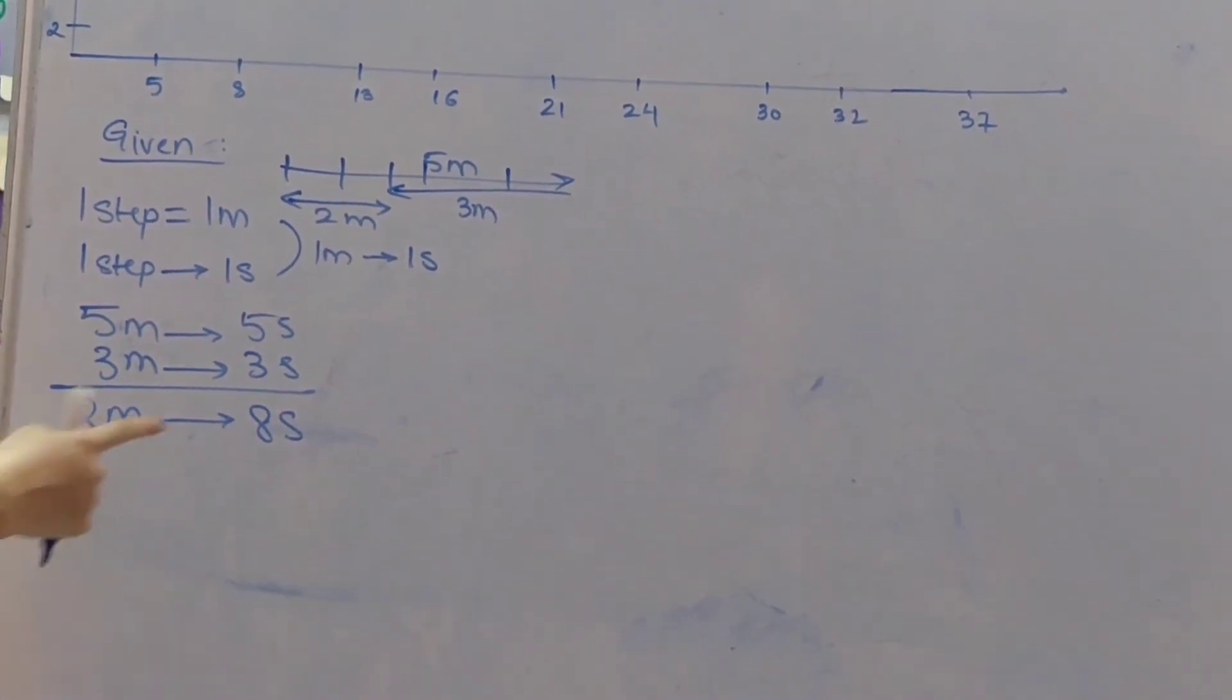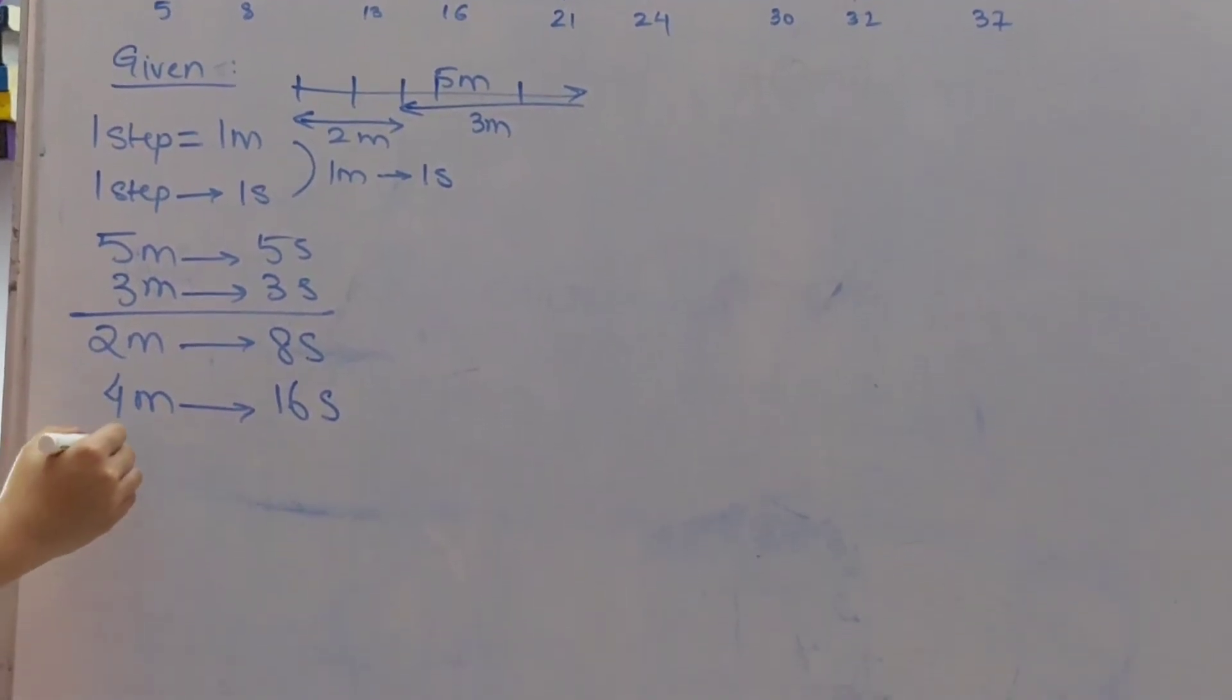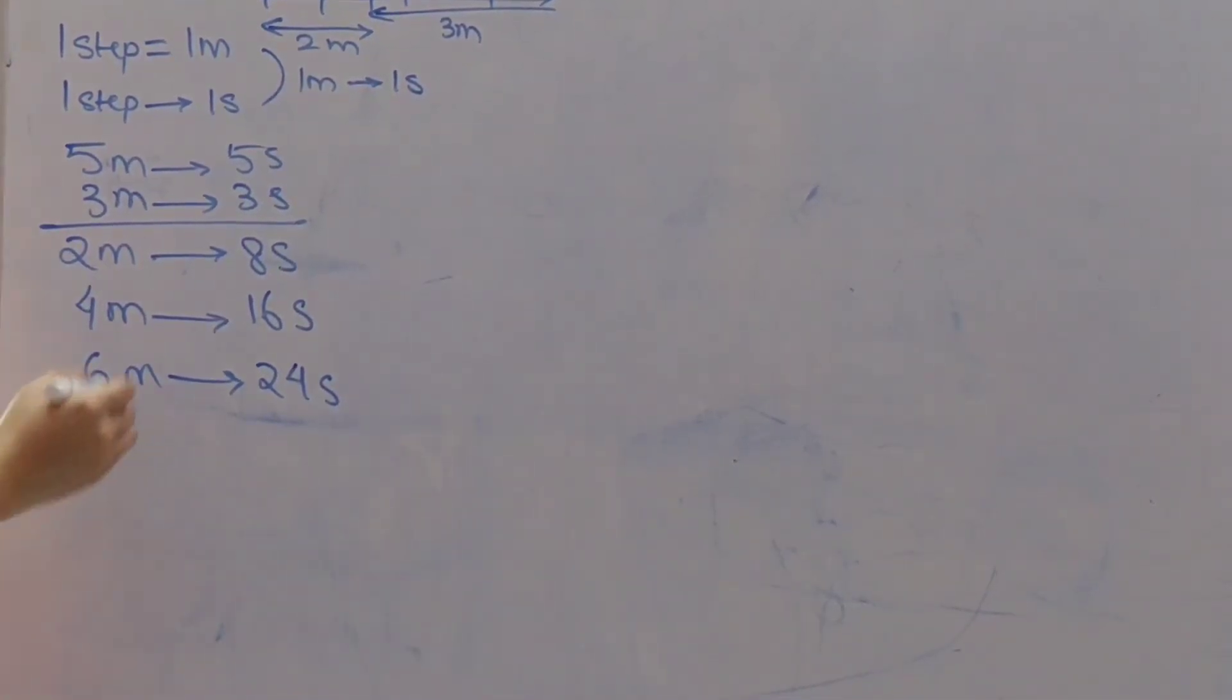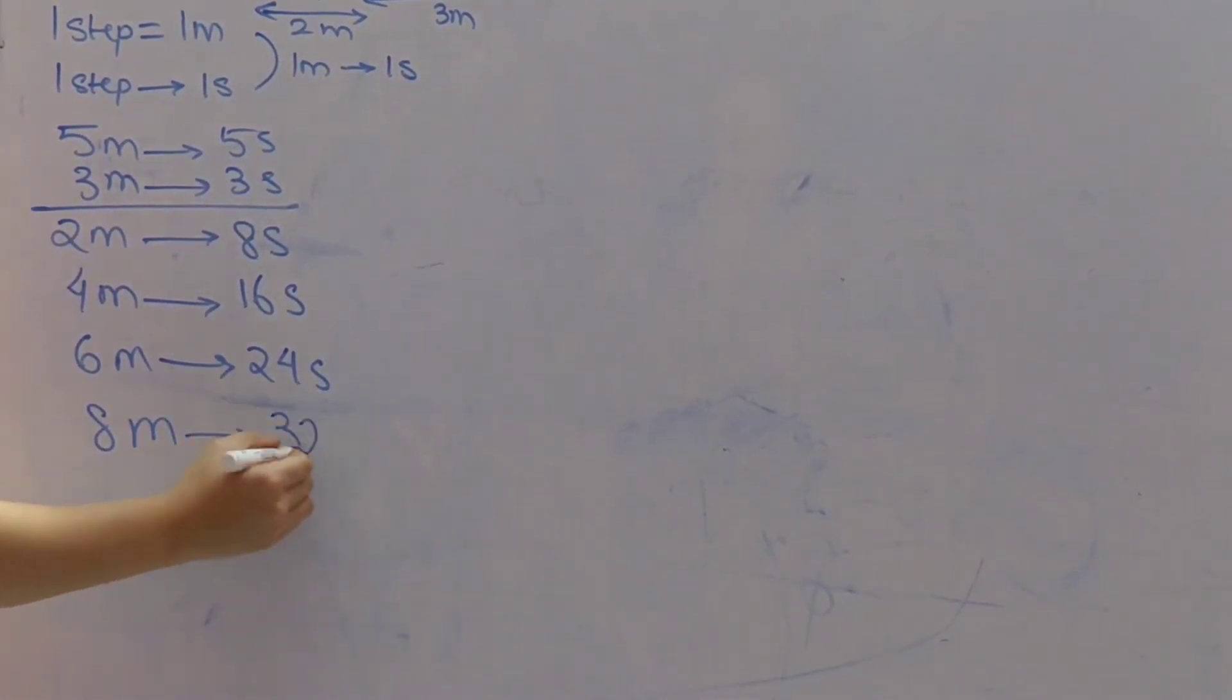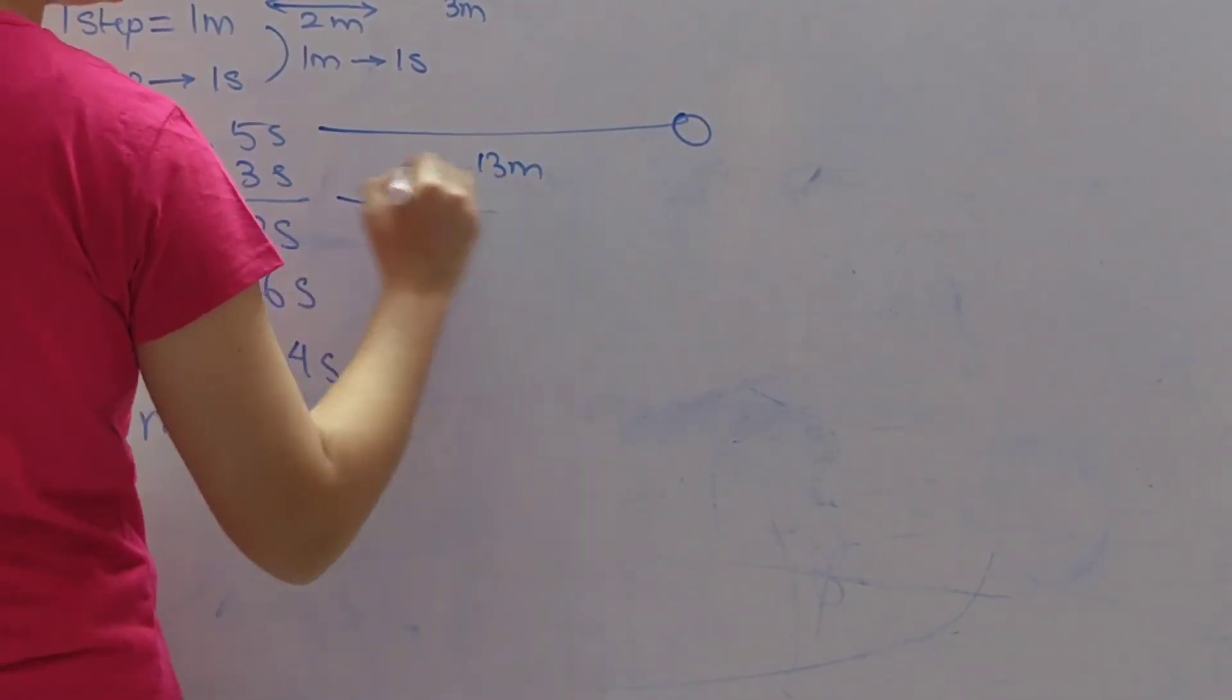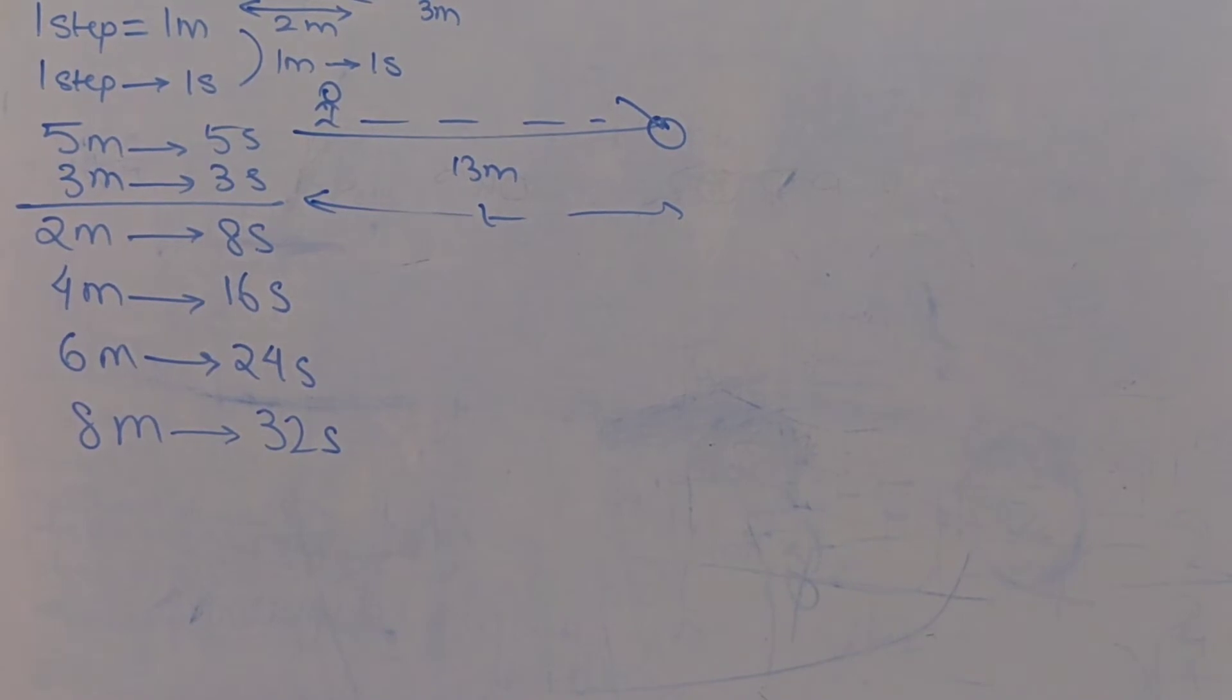So if he travels 2 meters in 8 seconds he travels 4 meters in 16 seconds, then he travels 6 meters in 24 seconds. I hope you get the relation. And then he travels 8 meters in 32 seconds. Now it is given in the question that about 13 meter away there is a pit and we have to find out the time he takes to walk till 13 meters and then fall into the pit.